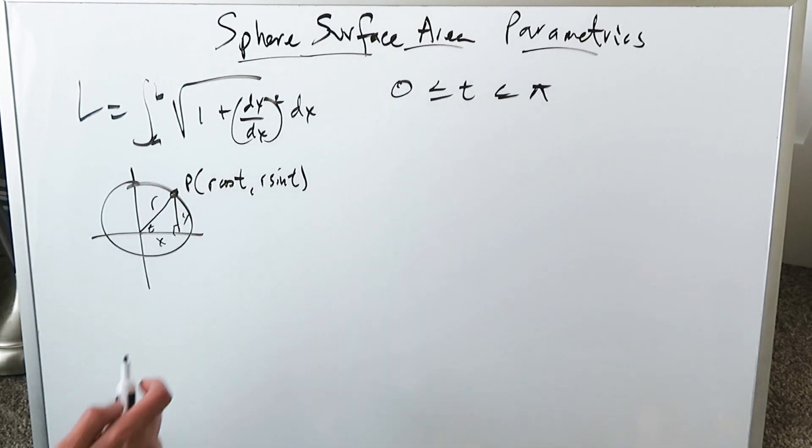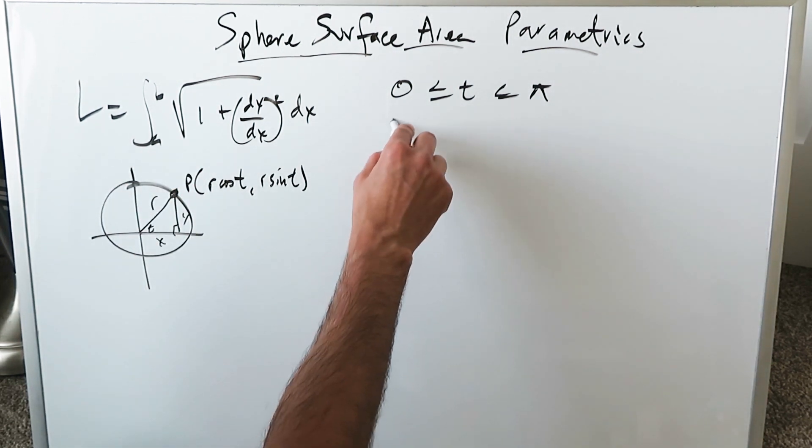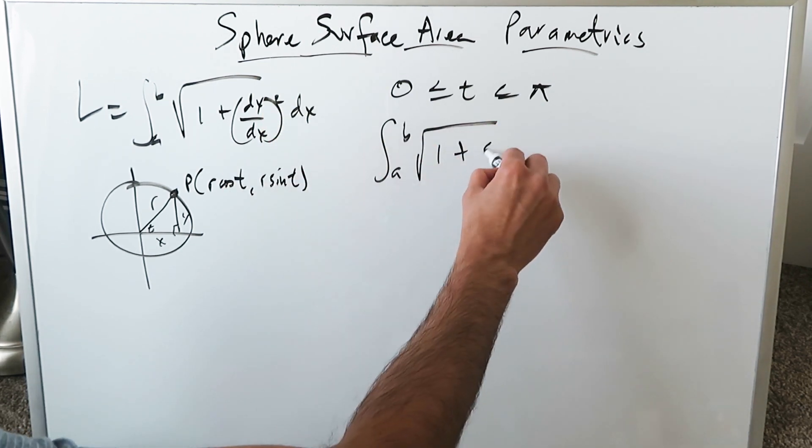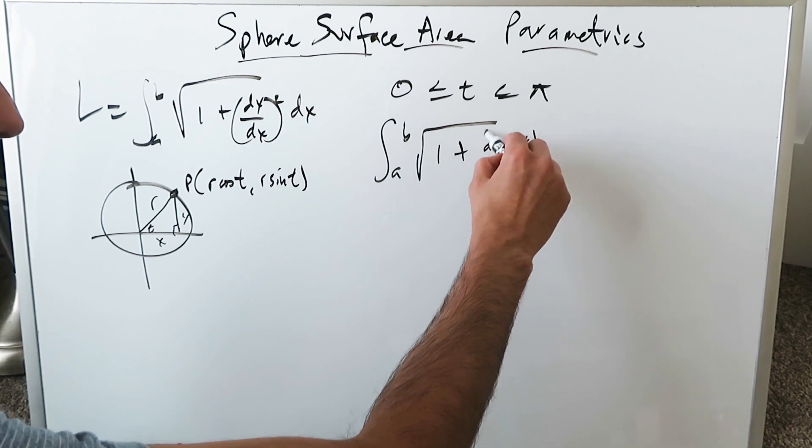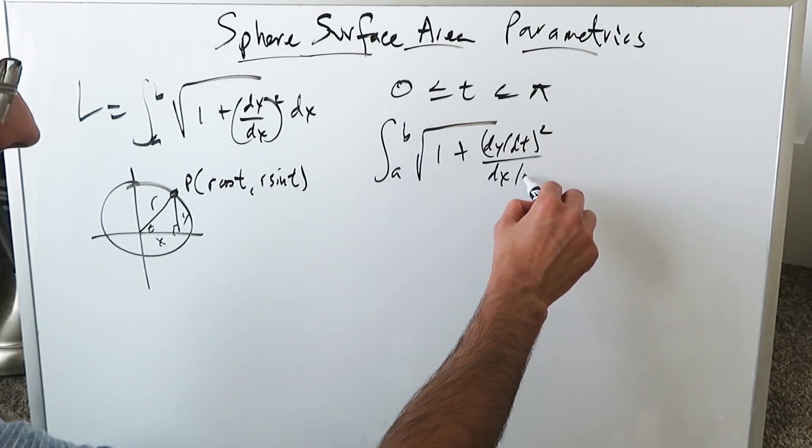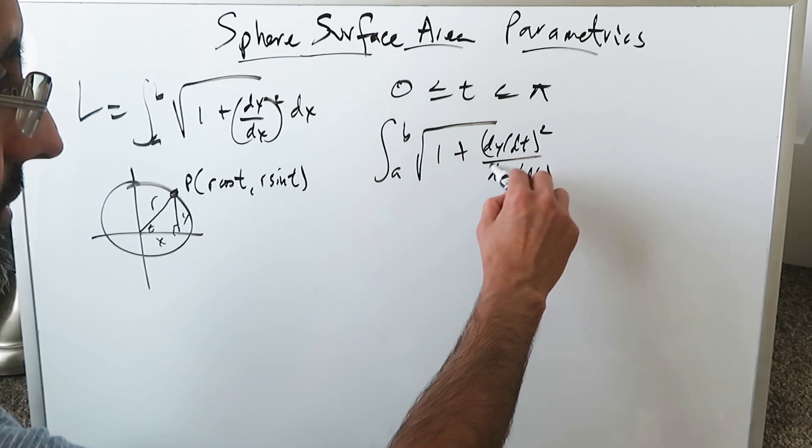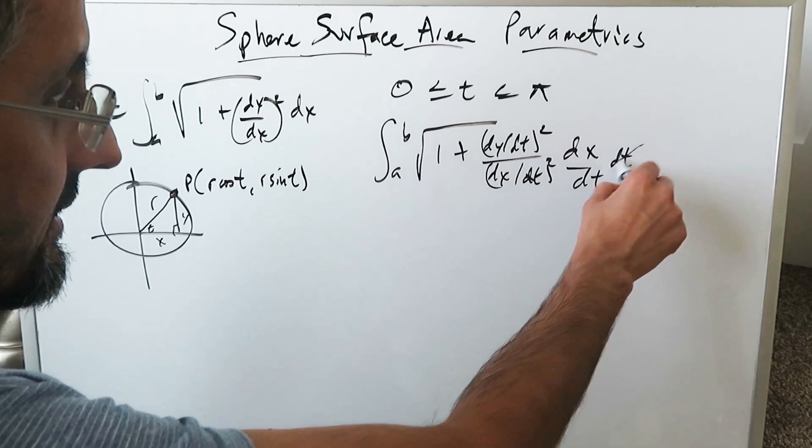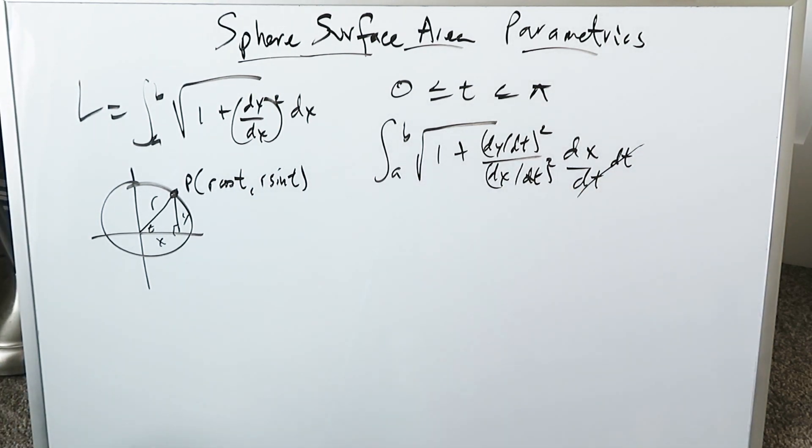Let's look at this arc length formula and bring in the parameter. We're looking from a to b, square root 1 plus (dy/dx)². I'll bring the parameter in terms of dt, and you're seeing what I'm doing: (dy/dt)² divided by (dx/dt)², and I have a dx/dt with respect to dt. These will cancel out, but the dt will come in.